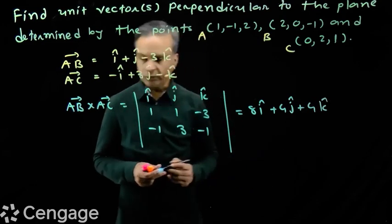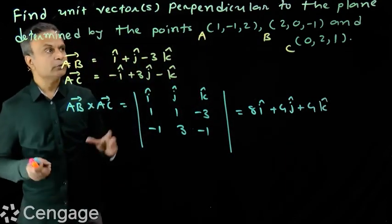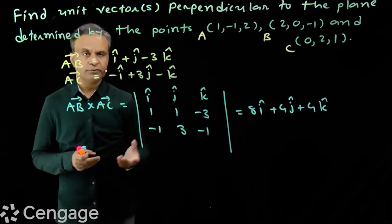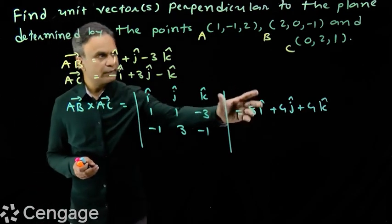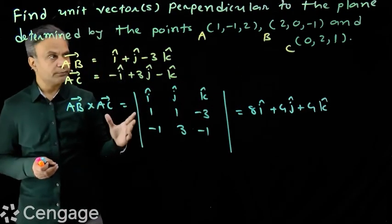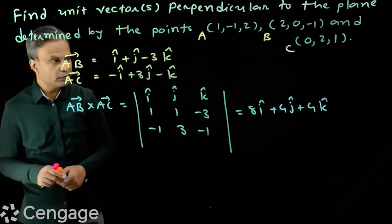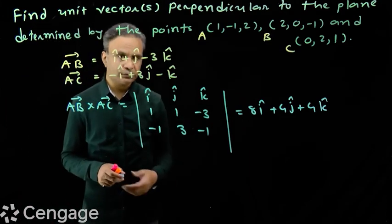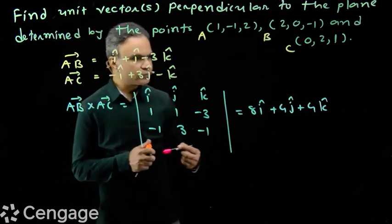This is vector AB cross AC: 8i + 4j + 4k. Now we want unit vectors perpendicular to this plane. This vector is perpendicular to the plane, but we need unit vector, so we divide this vector by its modulus.